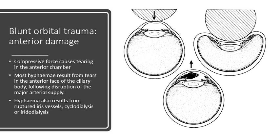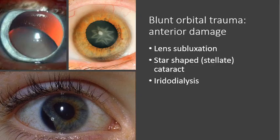So, if you have blunt orbital trauma causing anterior eye damage, there's a compressive force which causes tearing into the anterior chamber. Most hyphaemas result from tears at the anterior face of the ciliary body, and they disrupt the arterial supply so the hyphaema develops in the anterior chamber. The hyphaema can also result in ruptured iris vessels, cyclodialysis, or iridodialysis — when the structures tear away from one another, causing the bleeding.